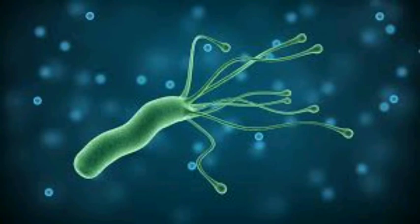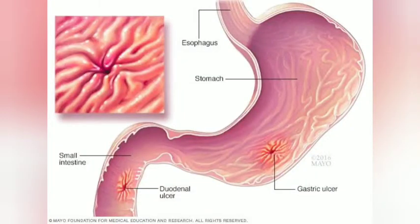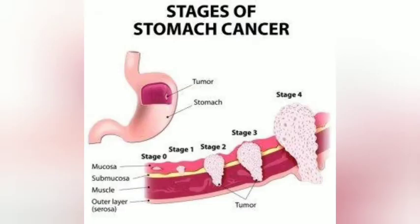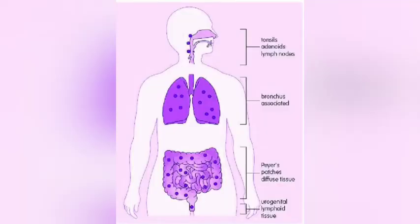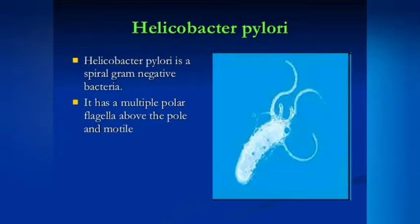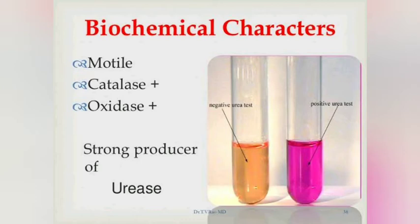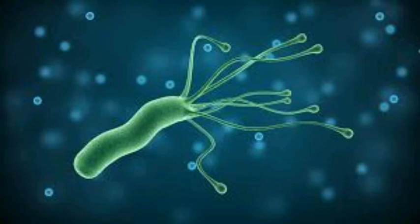Helicobacter pylori (H. pylori) is responsible for peptic ulcer disease and is also considered a risk factor for gastric malignancies such as adenocarcinoma and mucosa-associated lymphoid tissue (MALT) syndrome. Helicobacter pylori is a gram-negative, spiral-shaped or comma-shaped bacterium. It is catalase-positive, urease-positive, and oxidase-positive, with motile flagella.